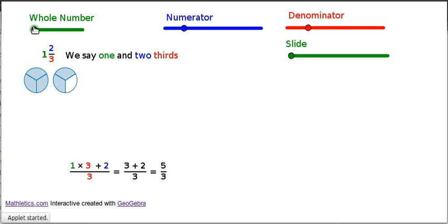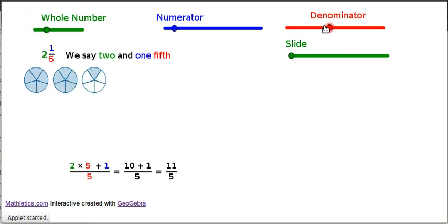So imagine that you have got 2 and 1 fifth. 2 and 1 fifth.